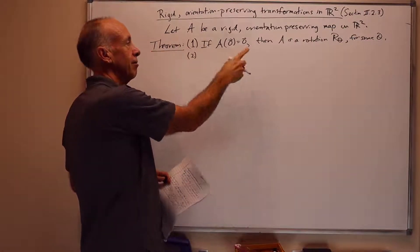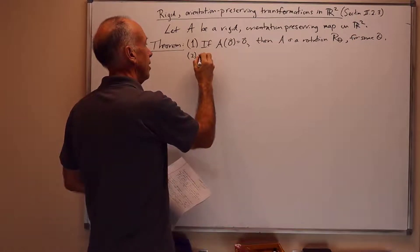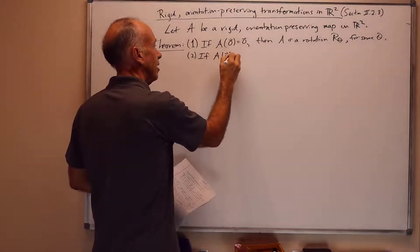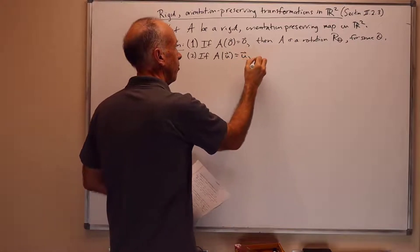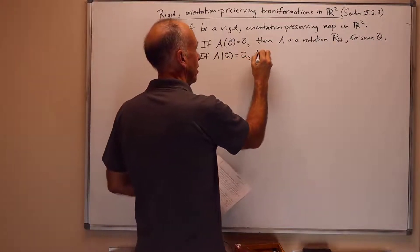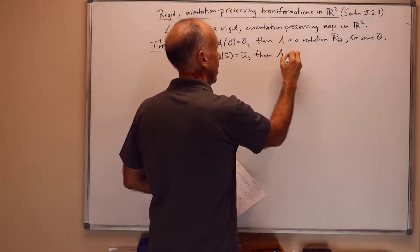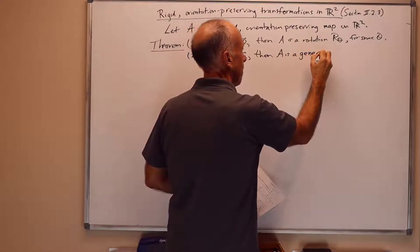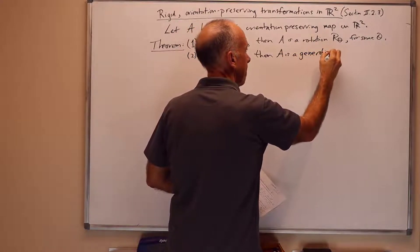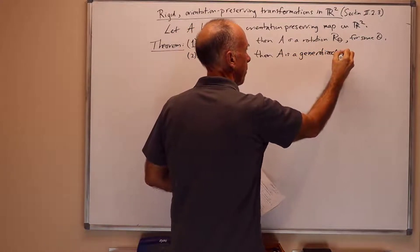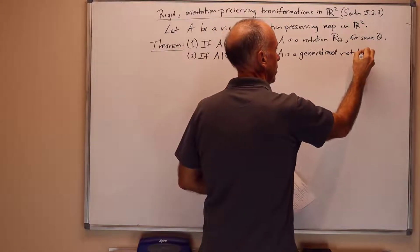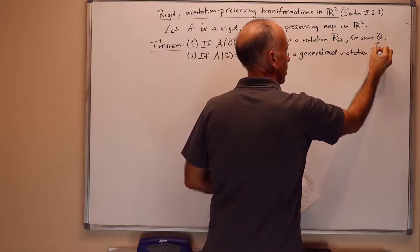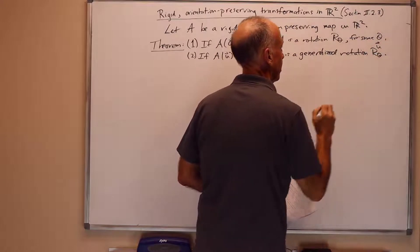This includes in particular linear maps, because linear maps map 0 to 0. More generally, if A of U equals U for some point U, then A is a generalized rotation R superscript U for some theta.